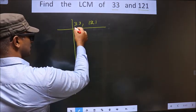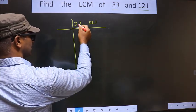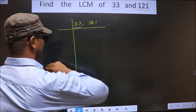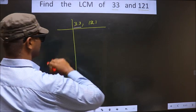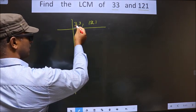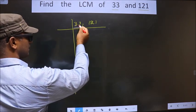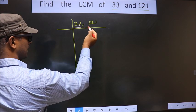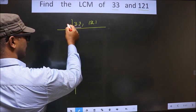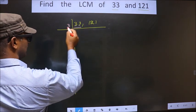First we focus on the first number, that is 33. Here both are 3s, and 3 is a prime number, so we take 3 here.